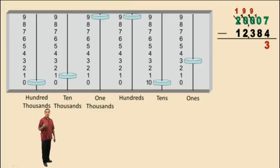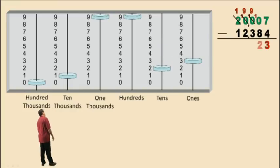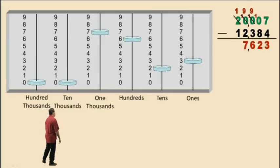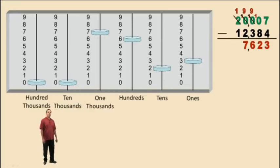Now we can perform the subtraction in our tens place. 10 subtract 8 is 2. 9 subtract 3 is 6. 9 subtract 2 is 7. And 1 subtract 1 is 0. So our answer is 7,623. That's it for now — we'll see you again soon.